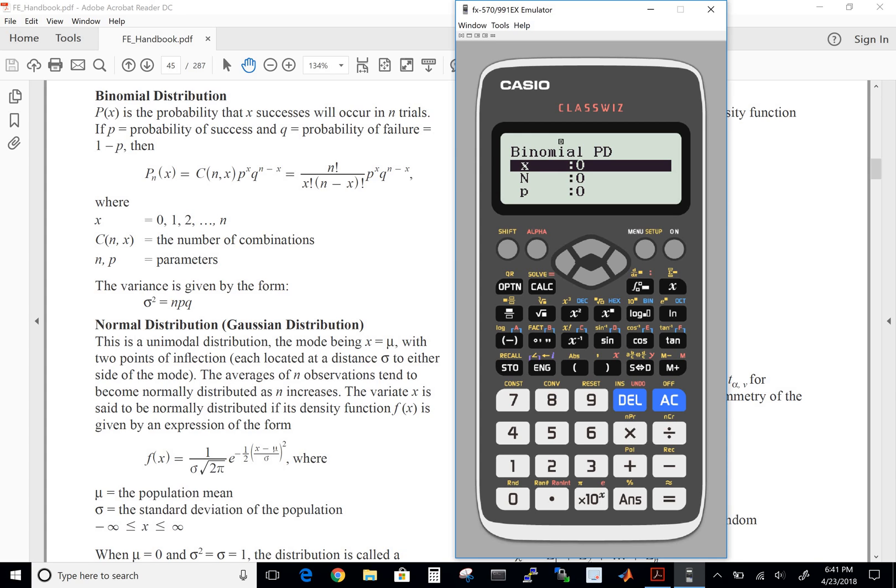We input the X, which is the number of successes, which in our case was 10. Hit enter. The number of trials, which was 20. Hit enter. And the probability, which was 0.5. This is the probability of success. Hit enter. You hit enter one more time, and then you get the probability equal to what we just solved, which is the 17.6%.